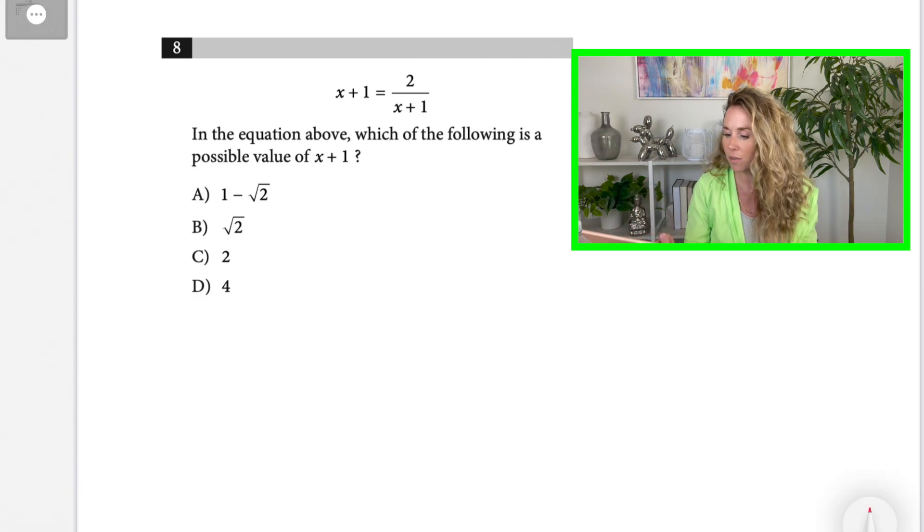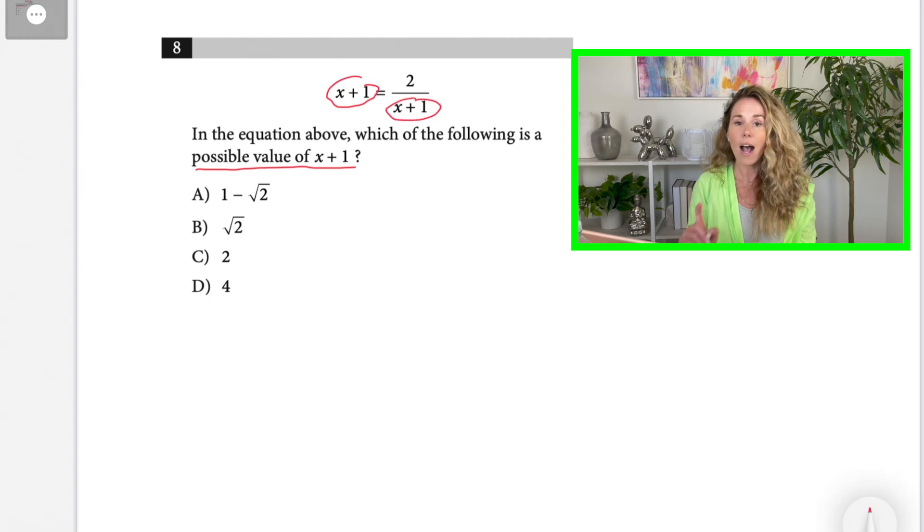So it says, what is the possible value of x plus 1? Okay, so that means they want to know what this whole thing equals, this x plus 1. So I'm going to start with a number. Let's start with C, just to see one that doesn't work. I'll start with the middle number, C.